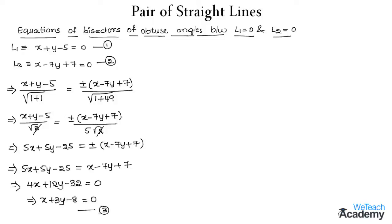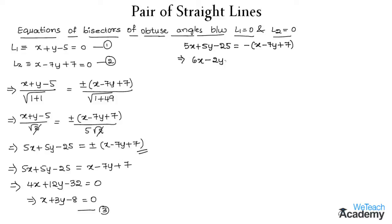We name this equation 3. Now taking the negative condition: 5x + 5y − 25 = −(x − 7y + 7). Rearranging: 5x + x = 6x, 5y − 7y = −2y, and −25 + 7 = −18, giving 6x − 2y − 18 = 0. Taking 2 as the common factor, we get 3x − y − 9 = 0. This is named equation 4.